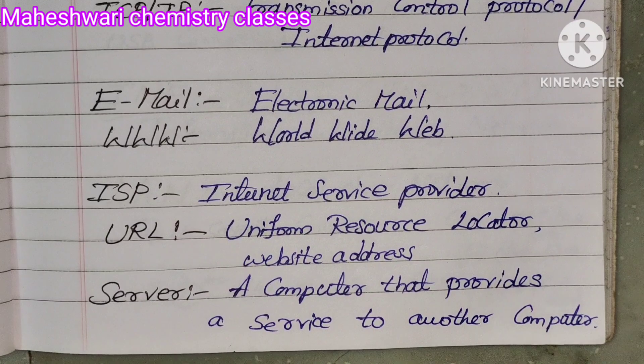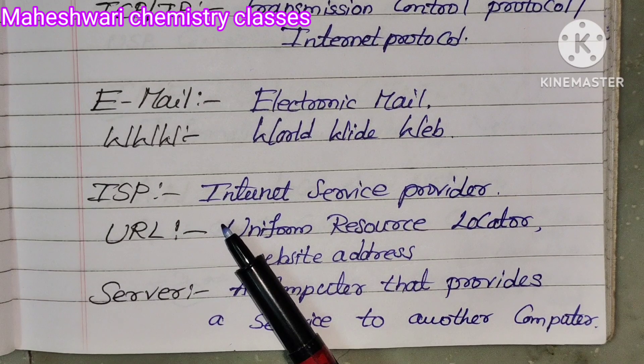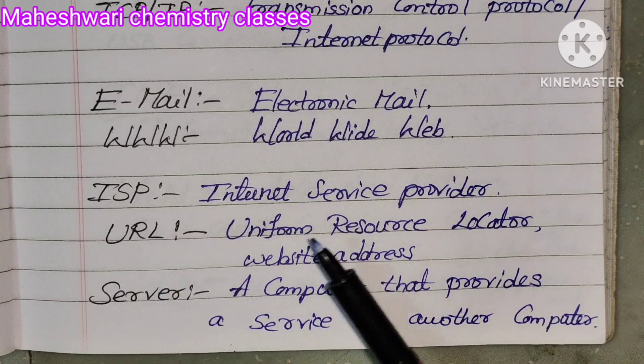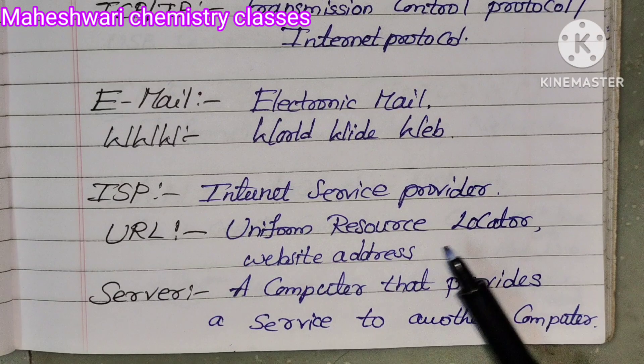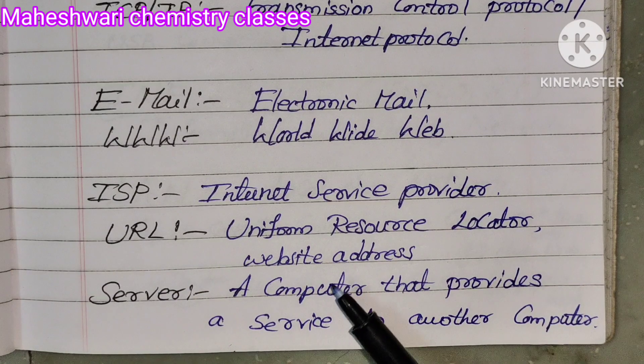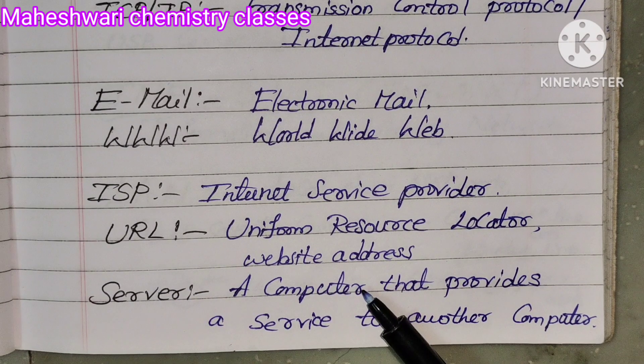ISP — Internet Service Provider. URL — Uniform Resource Locator, which is nothing but a website address.